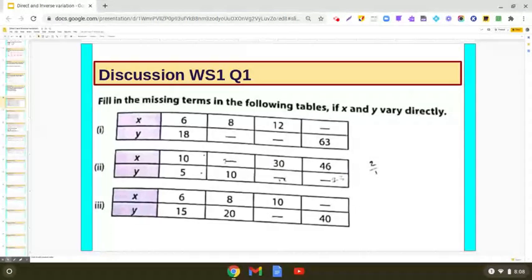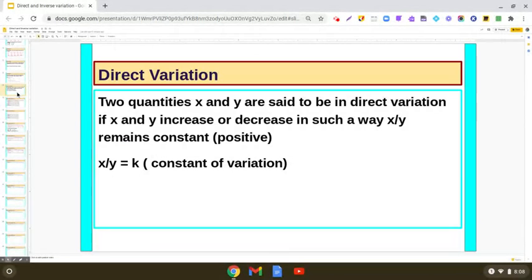What do you mean by x and y vary directly? We know that if there are two quantities x and y, they are said to be in direct variation if x and y increase or decrease in such a way that x upon y remains constant.